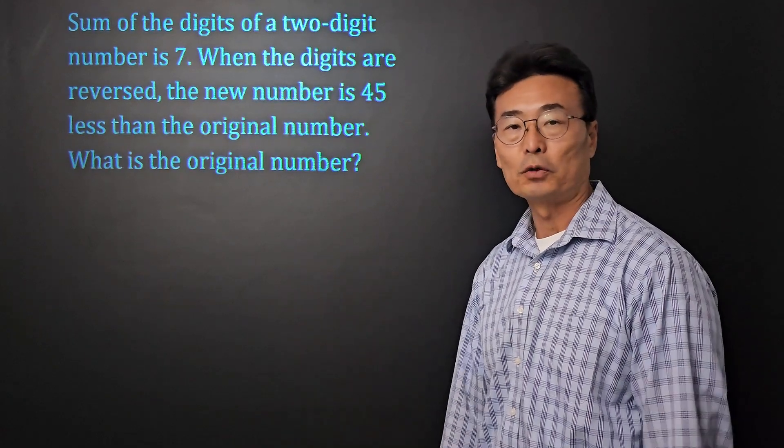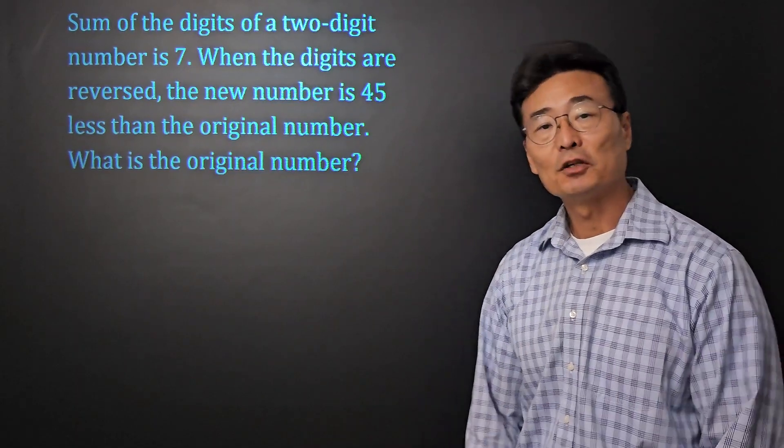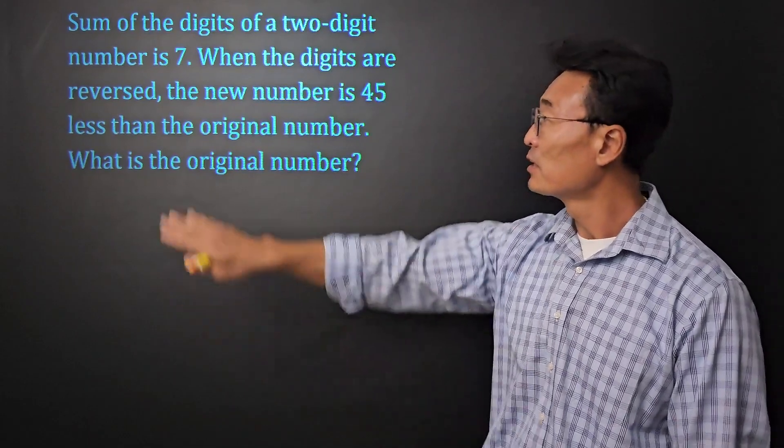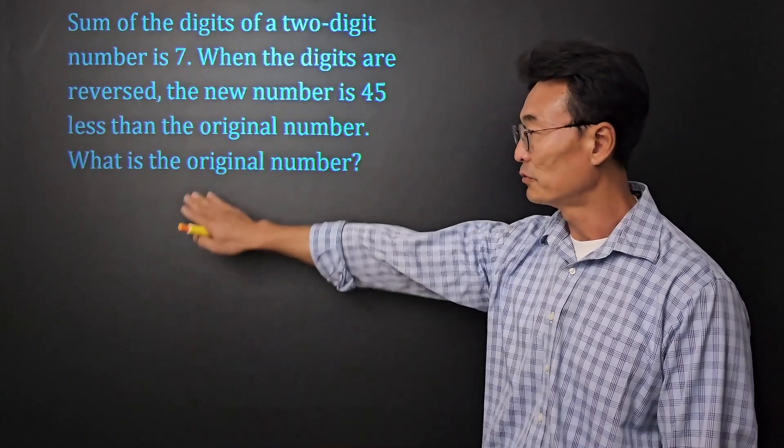Here we have a standard digits word problem. The problem reads: the sum of the digits of a two-digit number is seven, and when the digits are reversed, the new number is 45 less than the original number. And of course, we're looking for the original number.